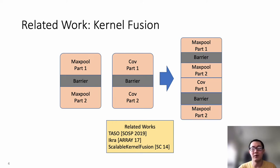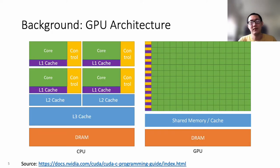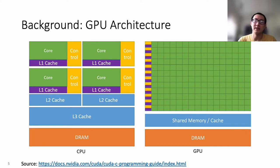For example, the traditional kernel fusion technique tries to fuse two kernels with data dependencies into one kernel. But why does kernel fusion improve the performance of the deep learning model? In order to understand why, we first need to learn some background about GPU programming and GPU architecture.